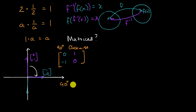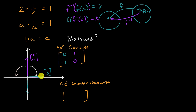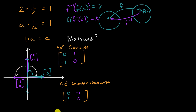Then we can think about what 90 degree counterclockwise would look like. If you're going counterclockwise, your original one-zero vector is going to become the zero-one vector, so we write that right over here. And then the zero-one vector will become the negative-one zero vector if you're doing a 90 degree counterclockwise rotation. In theory, these two transformations should undo each other — if I do a 90 degree clockwise transformation and then apply a 90 degree counterclockwise transformation, I should get back to where we began.